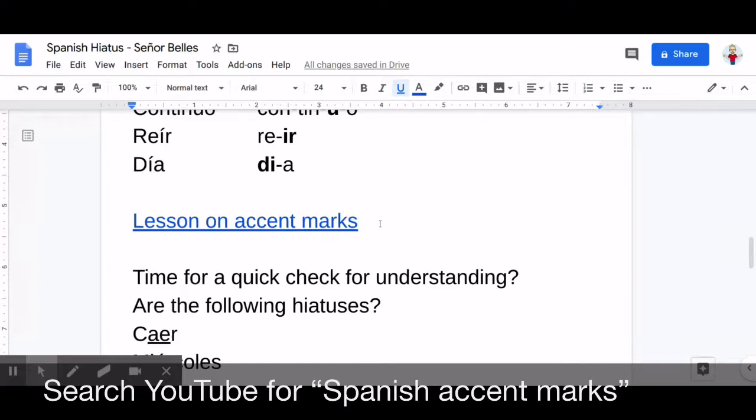So if you want to see if you can understand this, I've got six words and I've underlined on the words the two vowels that are together and I want you to decide if it's a hiatus or not. I'll pronounce the word for you, all six of them. Maybe pause the video and decide and then I'll tell you the answers. So the first one is pronounced caer, caer, second one miércoles, miércoles.